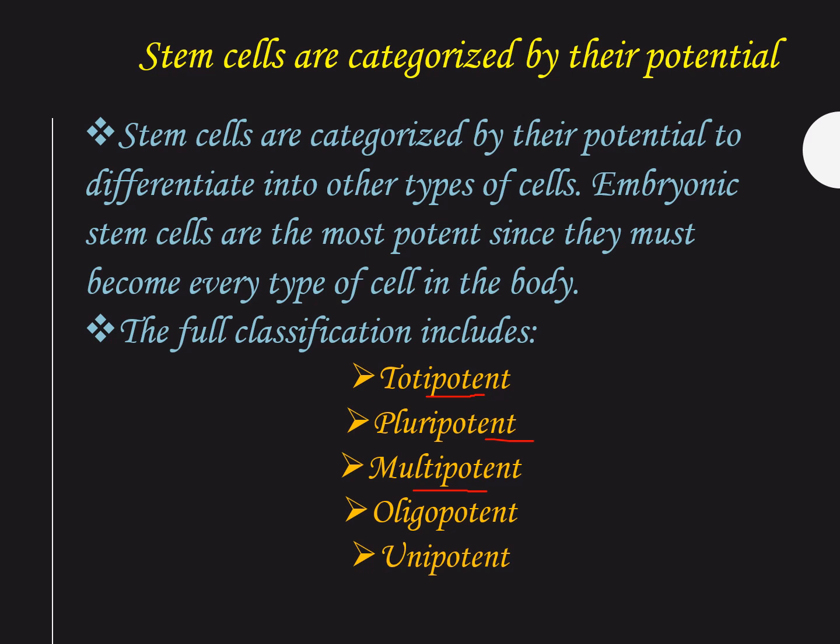Hematopoietic stem cells are an example of multipotent cells — they have the ability to produce red blood cells (RBCs), white blood cells (WBCs), and platelets. Next are oligopotent cells, which have the ability to differentiate into only a few cell types; examples include adult lymphoid or myeloid stem cells. Finally, unipotent cells can only produce cells of their own type, but they have the property of self-renewal, which is required to be labeled a stem cell. An example is muscle stem cells.